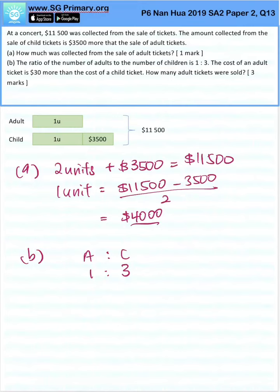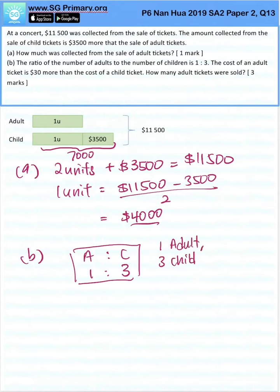So let's look at the children ticket sales. Children ticket sales is $7,500 because $4,000 plus $3,500. What this ratio tells us is that for every 1 adult, 3 child tickets are sold.